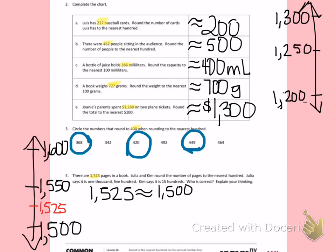If I look back at my question, I can see that Julia is correct. Kim says 1,500, so I'm going to count by hundreds 15 times to see if I also get 1,500.